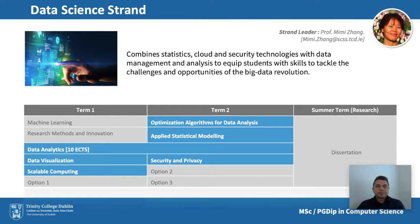The second strand is data science, and it is one of our most popular strands — we easily get about a thousand applications each year for just 40 places. This strand leverages the school's unique combination of experts in statistics and computer science, dealing with how to gather and store data using computing technologies, how to process it using statistics and machine learning, and how to deliver new insights through data visualizations. The strand combines statistics, cloud and security technologies with data management, addressing the skills and opportunities of the big data revolution.